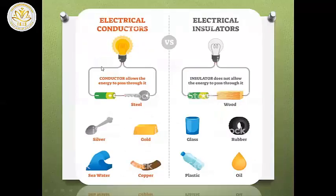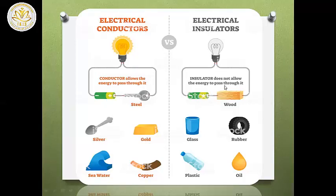Now we can compare between conductors and insulators. Electric conductors are materials that allow electric energy to pass through them — like silver, gold, copper, salt solutions, and sea water. While electrical insulators are materials that do not allow electric energy to pass through them — for example, glass, rubber, wood, oil, and plastic.